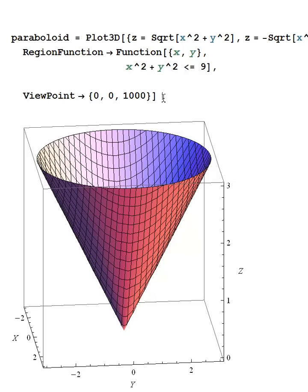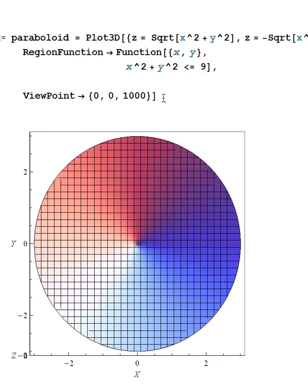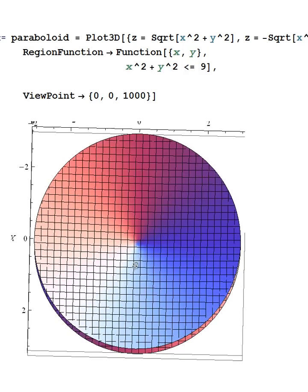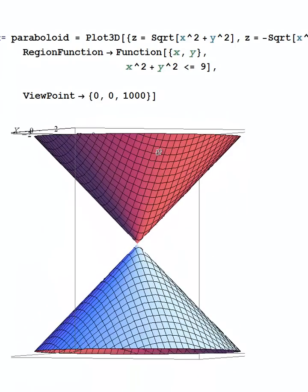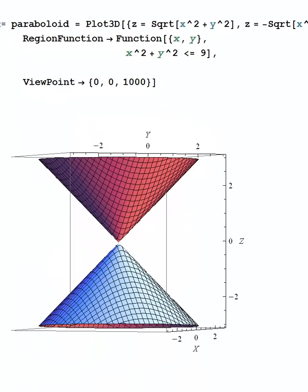In the same region, if you look at the top view, no surprise you get a disk. But if you look at the side view, you now get a double cone.